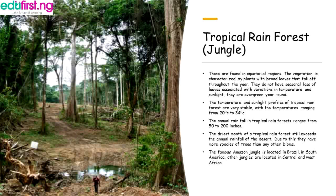The temperature and sunlight profiles of tropical rainforests are very stable, with temperature ranging from 20 degrees centigrade to 34 degrees centigrade. The annual rainfall in tropical rainforests ranges from 50 to 200 inches. Even the dry season of the tropical rainforest still exceeds the annual rainfall of the desert. Due to this, they have more species of trees than any other biome. The famous Amazon jungle is located in Brazil, South America.